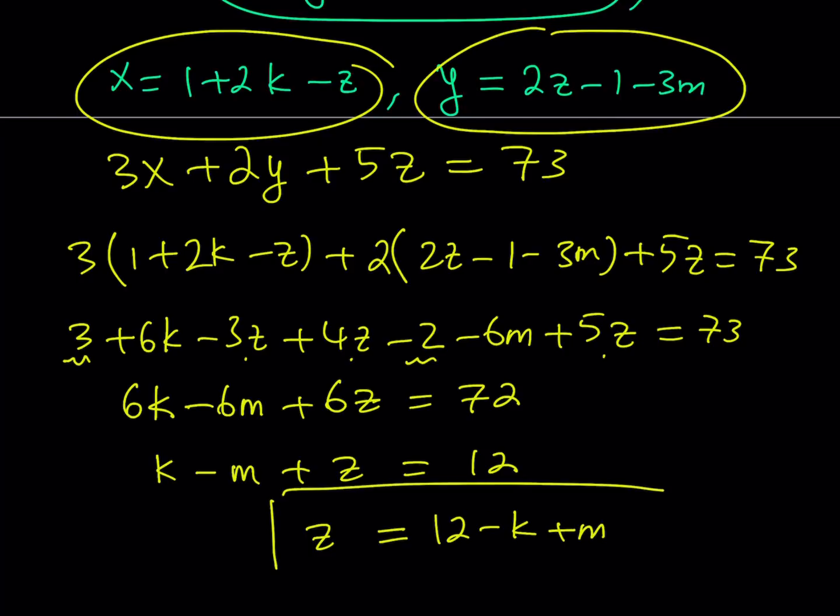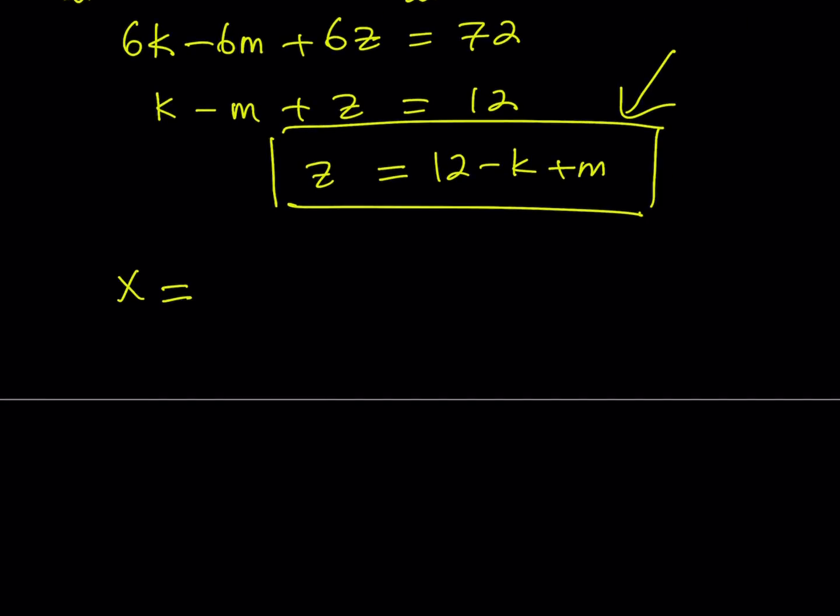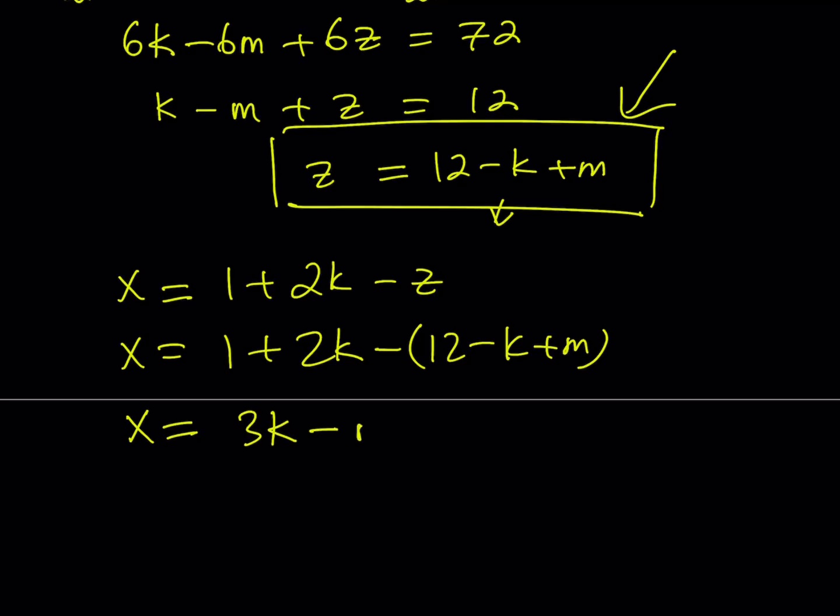Now I got an expression for z. What I'm going to do is note that we have z here and here. I'm going to replace those z's with this one. I have x equals 1 plus 2k minus z. Let's replace z with what it is here. If you simplify, you get 1 minus 12, that's negative 11. 2k plus k is going to be 3k. That's going to give me 3k minus m.